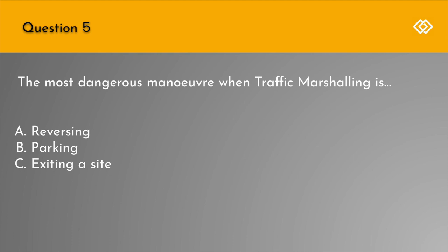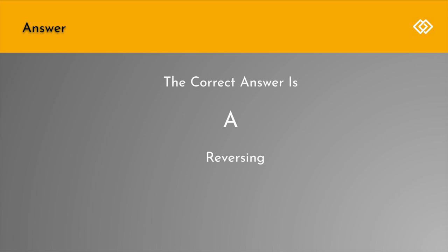Question 5. The most dangerous manoeuvre when traffic marshalling is: A. Reversing. B. Parking. Or C. Exiting a site. The correct answer is A: Reversing.